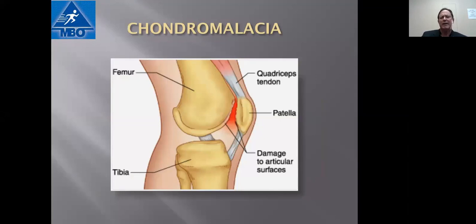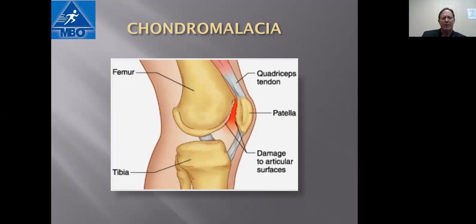Chondromalacia is basically a softening of the cartilage on the undersurface of the kneecap. By far the most common cause of knee pain we see in the office across all age groups, it is very common in young females, teenage and slightly younger. There's not necessarily a correlation between the severity of the pain and the severity of the condition. This is always treated non-surgically — most people can be treated with an exercise program, physical therapy, activity modification, sometimes an injection, and perhaps some anti-inflammatory medication.